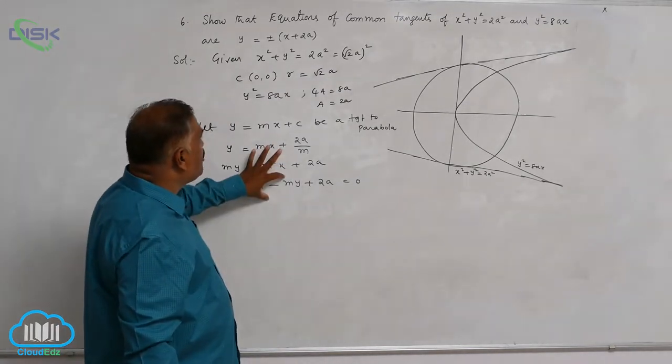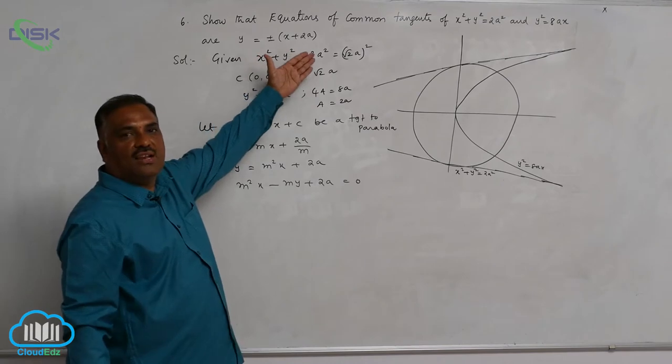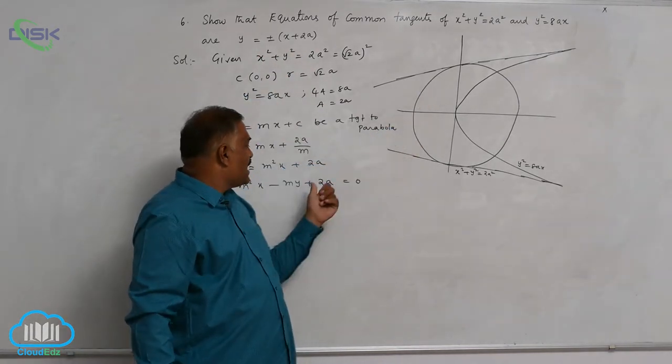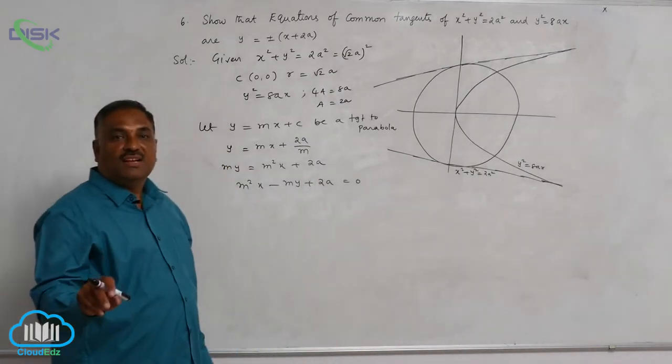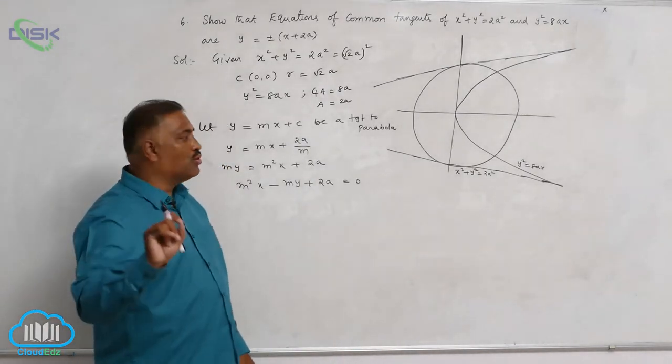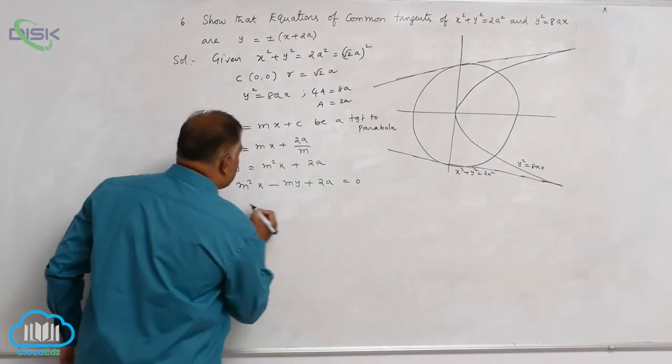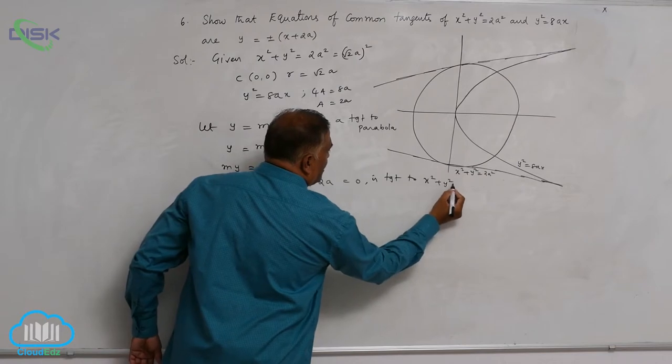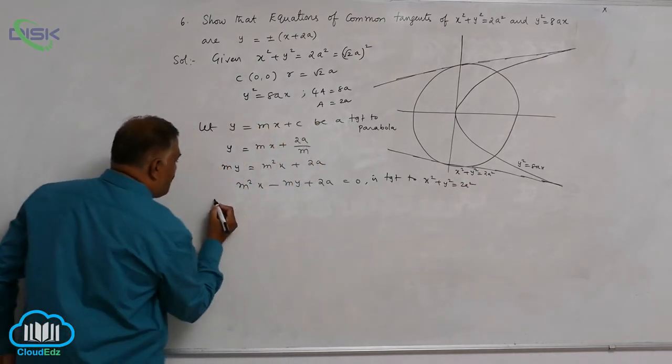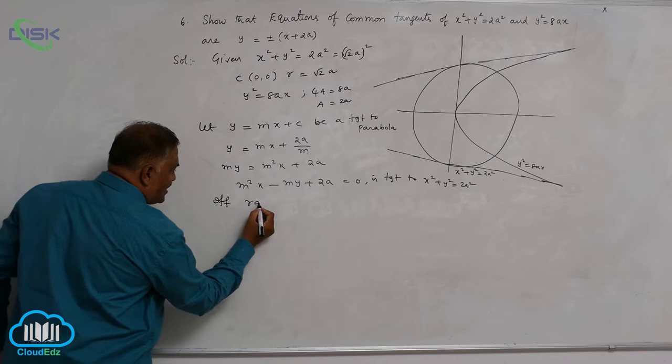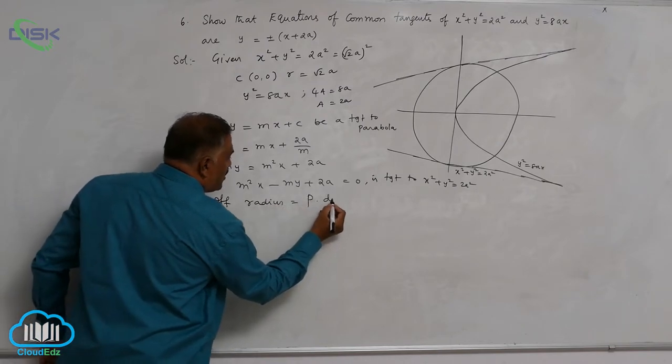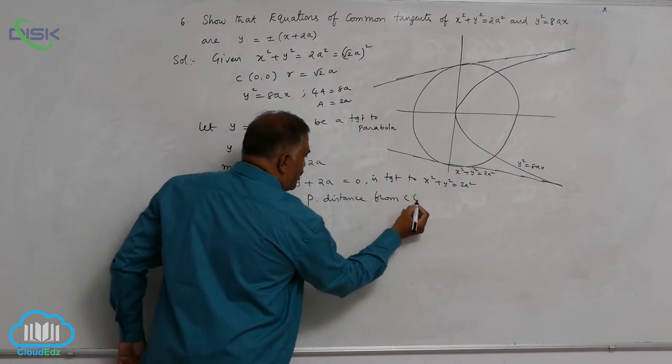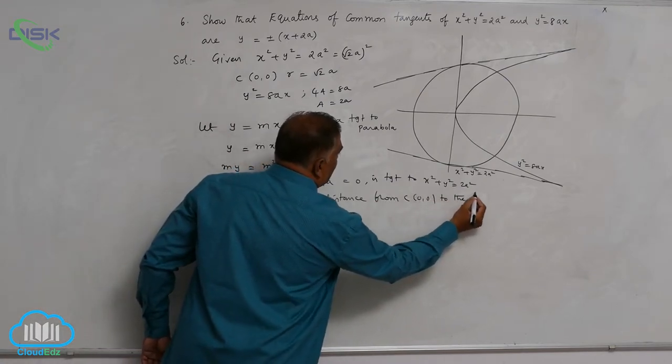Is it in the format of lx plus my plus n equal to 0? Now this line is going to be again tangent to the circle because we have taken the tangent line for parabola. Now we claim that it is tangent to this circle also. So this is tangent to x square plus y square equal to 2a square if and only if the condition is radius is equal to perpendicular distance from center 0, 0 to the given line.